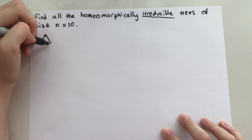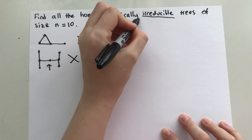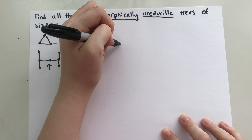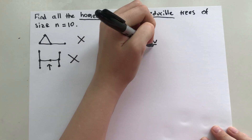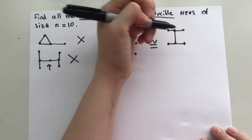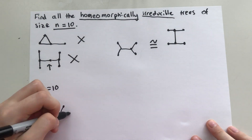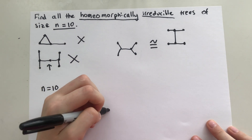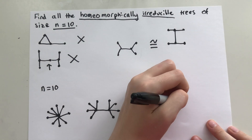So of course the question on everyone's minds is: what was the problem on the board? The problem concerns homeomorphically irreducible trees of size n equals 10. By irreducible we mean that the tree can't have a cycle, or essentially have a point be irrelevant because it's just part of a line. By homeomorphic we mean that two trees are homeomorphically identical if they could be made to look the same by simply moving around some of the arms. By n equals 10 we mean that we must have 10 points connected by lines. Here are two of them — can you find them all?